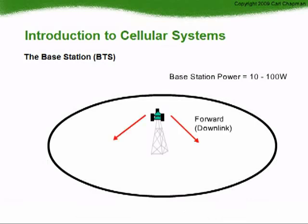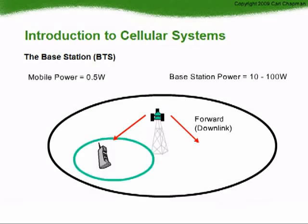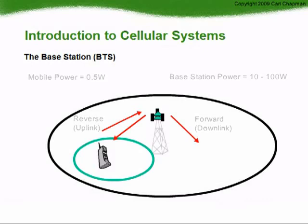The transmit signal from the base station is called the forward or downlink. Mobile and portable phones typically have a low output power of 0.5 watts maximum, and being close to the ground, their range is significantly smaller. The transmit signal from the mobile is called the reverse or uplink.